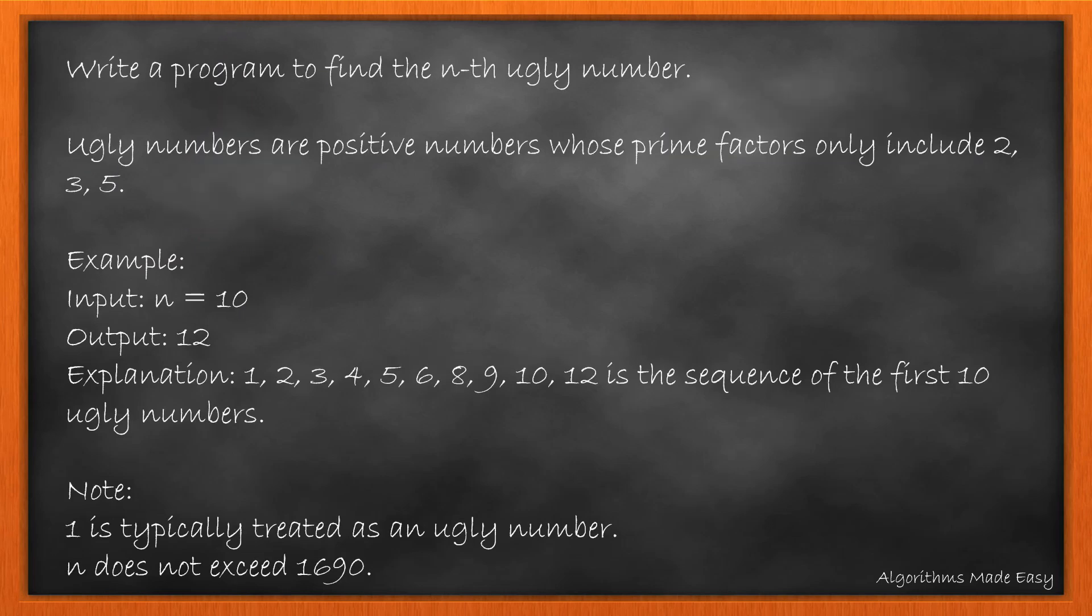Write a program to find the nth ugly number. Ugly numbers are positive numbers whose prime factors only include 2, 3, and 5. In the given example we need to find the 10th ugly number which comes out to be 12. We are given notes that 1 is typically treated as an ugly number and n does not exceed 1690.